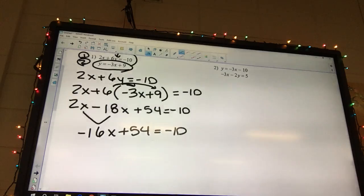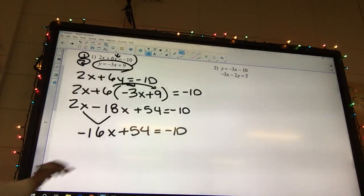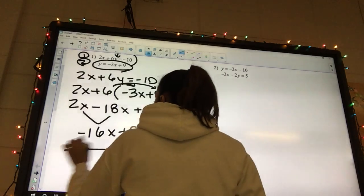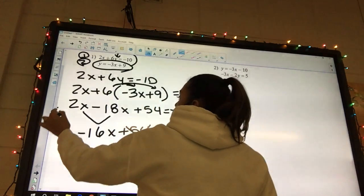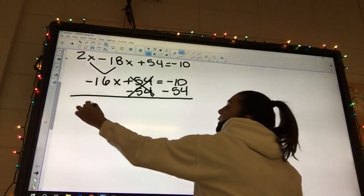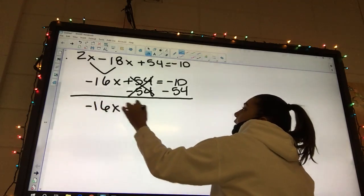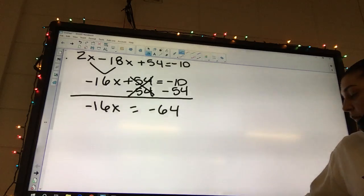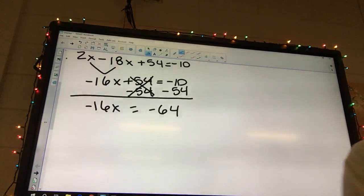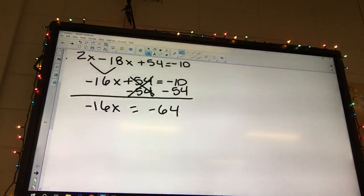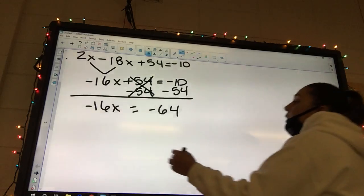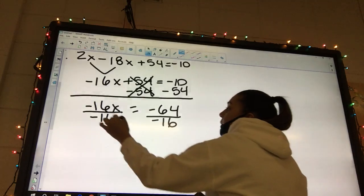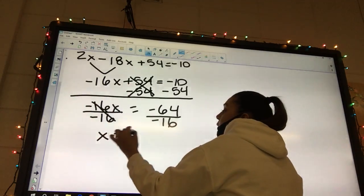Okay, what's our next step? Subtract 54 from both sides. Okay, and so I'm going to have negative 16x equals negative 64. Okay, so we're going to divide by negative 16. Divide by negative 16. X equals 4.